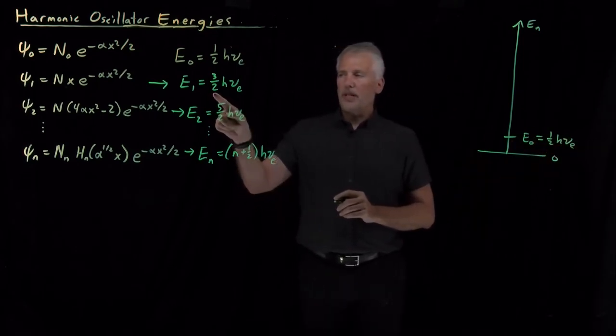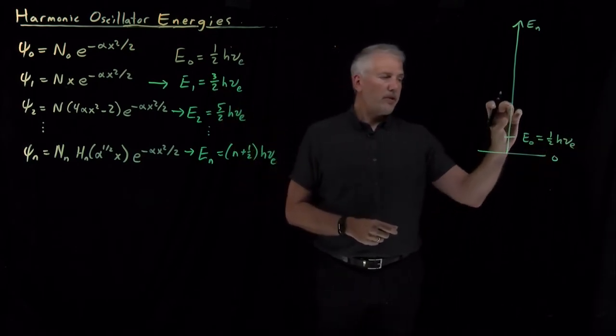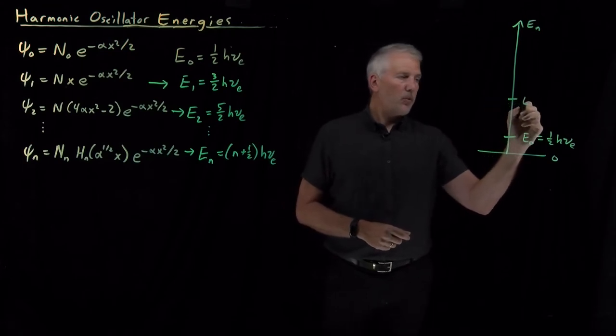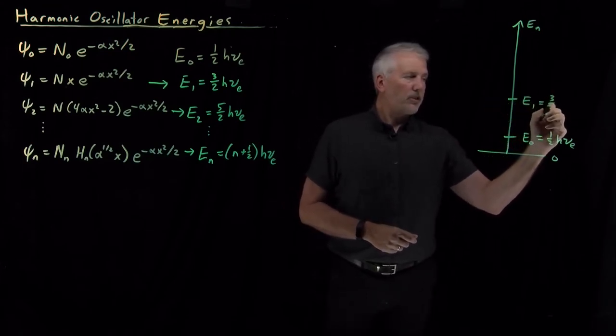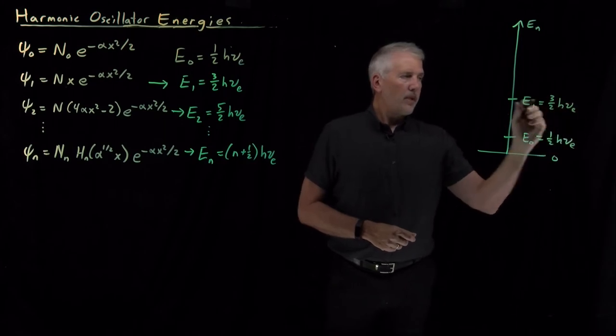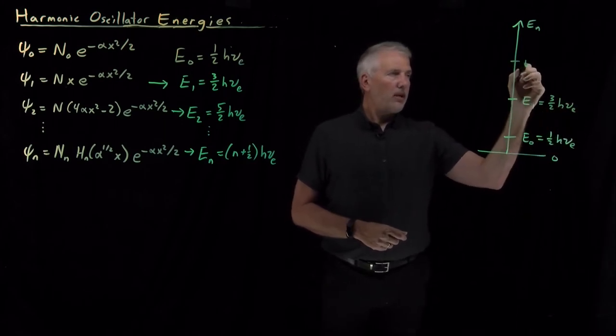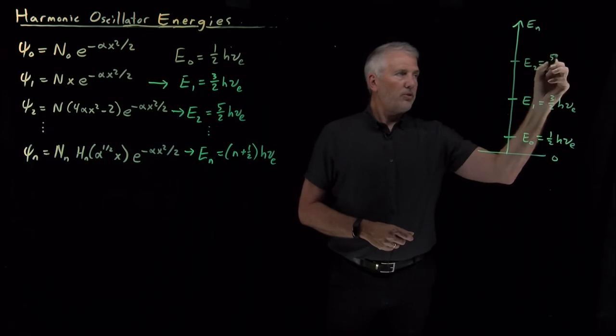The next one up is three times larger, three-halves. So one-half, two-halves, three-halves. Somewhere around here will be the energy of the n equals one wave function, and then an equal amount higher will be the n equals two wave function, and so on.